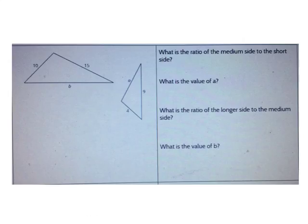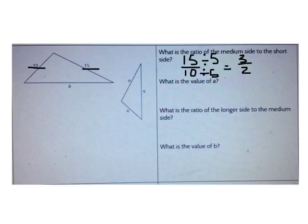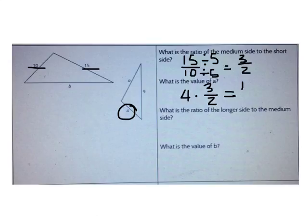Let's do 2 more. Look at these two triangles. What is the ratio of the medium side to the short side? I can see that the medium side I know is 15 and the short side is 10. The greatest common factor of 15 and 10 is 5. When I simplify, I get 3 halves. So the value of a: a is the medium side and 4 is the short side. I can multiply 4 times 3 halves. 4 times 3 halves is 12 over 2, which is the same as 6.